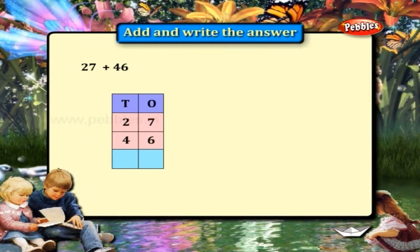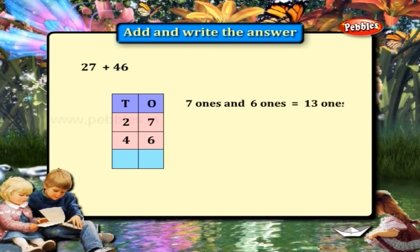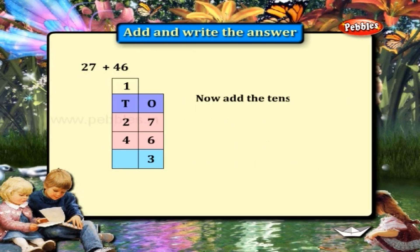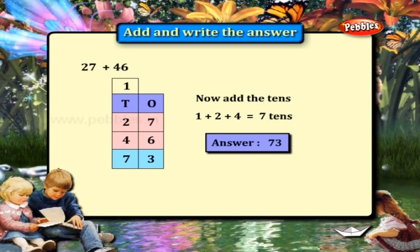27 plus 46. Add the ones: 7 plus 6 is equal to 13. Change 13 ones to 1 ten and 3 ones. Write 3 in the ones place. Carry 1 to the 10's place. Now add the 10's: 1 plus 2 plus 4 is equal to 7. The answer is 73.